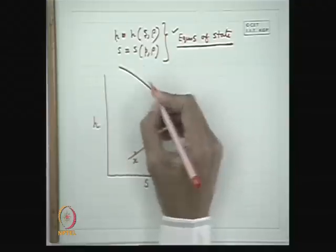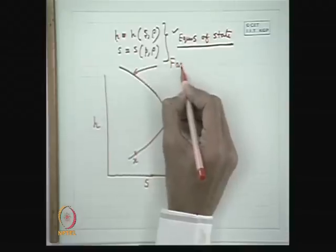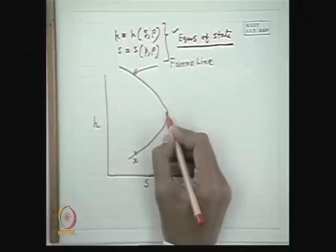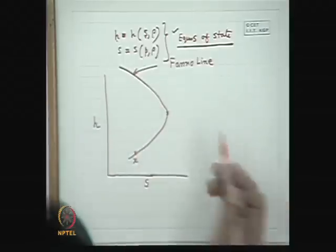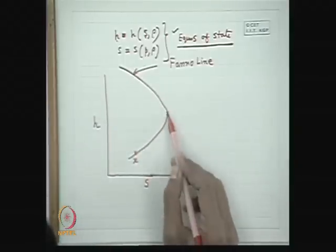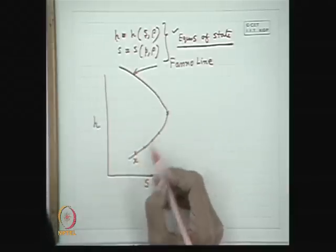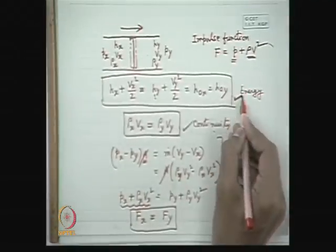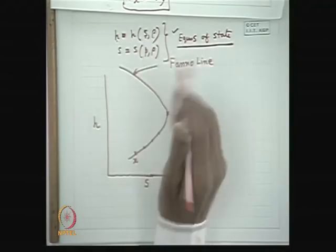This curve is known as the Fanno line. It has a point where the curve shows a maximum in S — that is the point of maximum entropy. The Fanno line represents the locus of points which mathematically satisfy the energy equation, the continuity equation, and the equation of state.